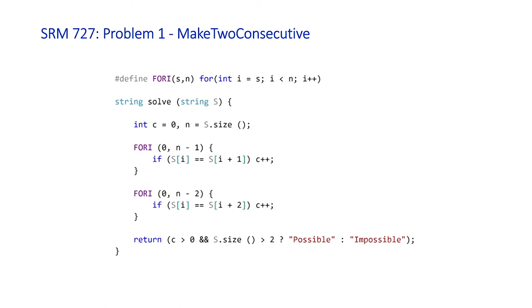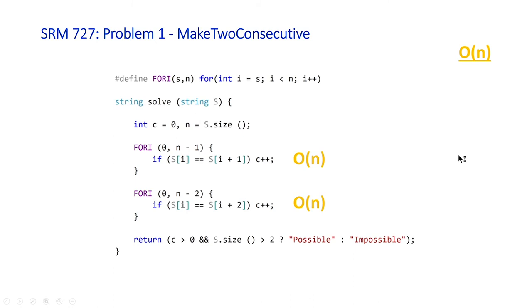So what's the complexity of this? We only have two loops, so this will clearly be linear. Technically big O of 2n, but you drop the constant, so the final complexity of this problem is linear.